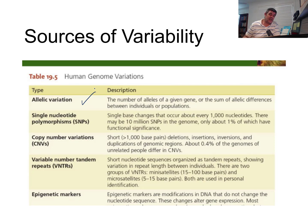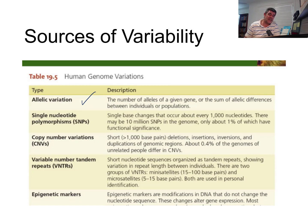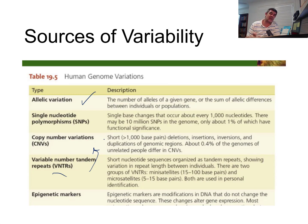We've discussed SNPs previously, and also started to look at copy number variations — basically what we talked about in terms of deletions, insertions, and substitutions. There are more variations that can occur in genetic sequencing than we've talked about previously. We've also talked about tandem repeats, these VNTRs, which are slightly different in the sense that we're looking not at mistakes or changes in the code, but repetitions in the code, which can occur on a small or quite large repetitive basis. And also things like epigenetic markers. So there's a range of different types of things that can create or enhance the variability within a population.